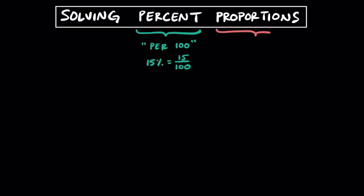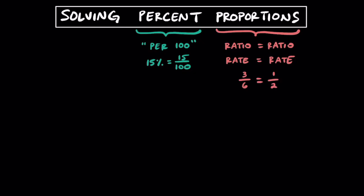As for the word proportion, a proportion is when a ratio is set equal to another ratio, or a rate equals another rate. For example, if you set the ratio 3 to 6 equal to the ratio of 1 to 2, they form a proportion. You can see that if you divide the top and bottom by the same number — 3 — we get an equivalent ratio.